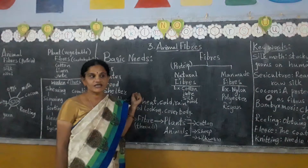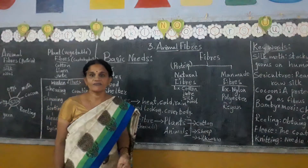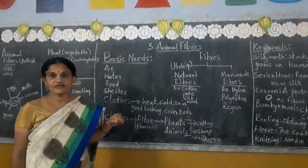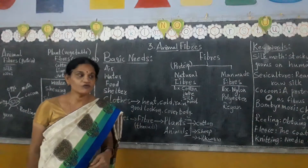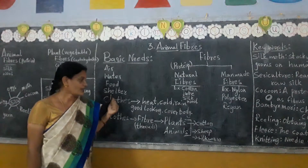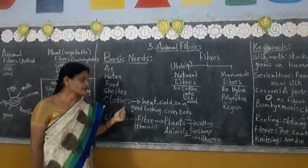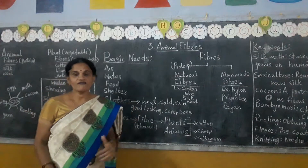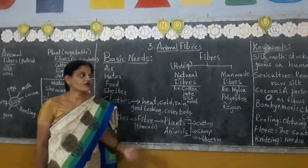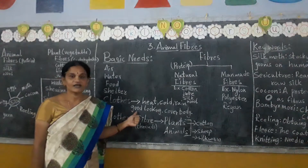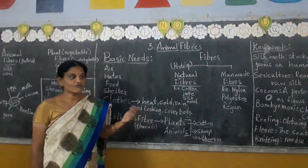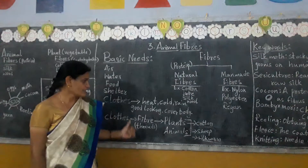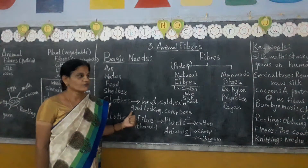Before going to the lesson, I will ask you every time: what are our basic needs, our important needs to live on this earth? We need air, we need water, we need food. But also we need shelter to live in one place, and we need clothes to protect from heat, rain, and cold, and also to cover our body.